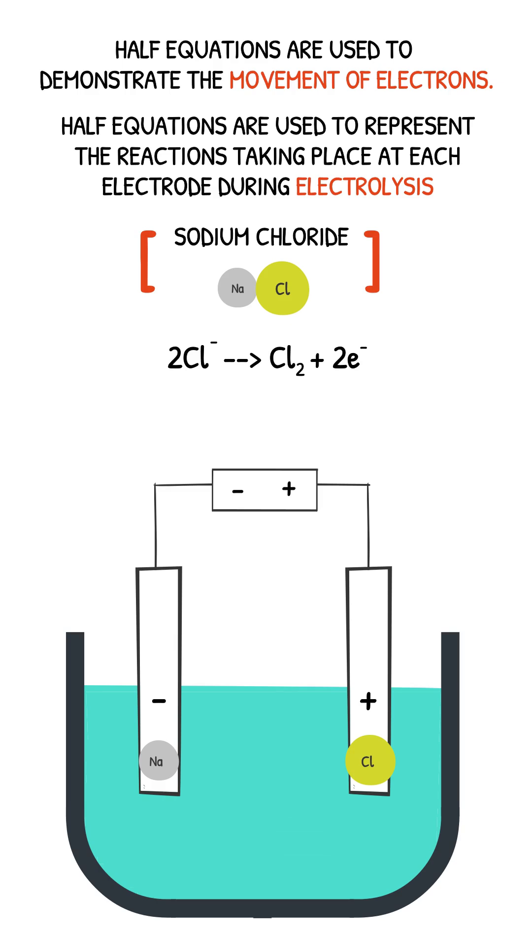Chlorine is a diatomic molecule, meaning in its neutral state it will exist in a molecule consisting of two of its atoms. Because our molecule must consist of two chlorine atoms, we must have had two chlorine ions at the start of the reaction, and each would have lost one electron each.